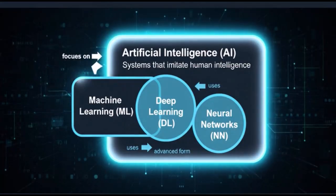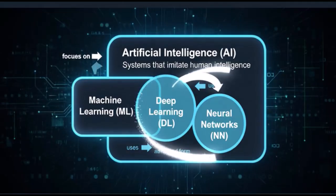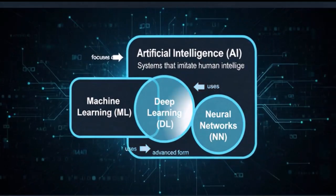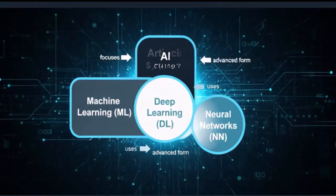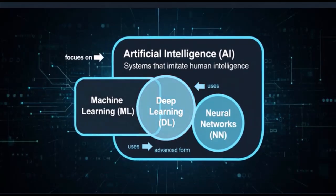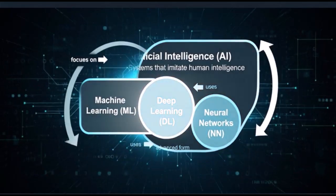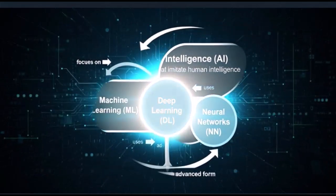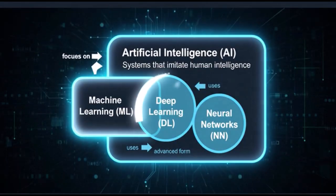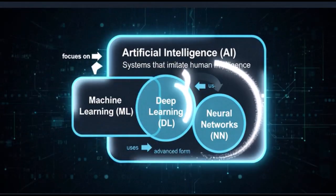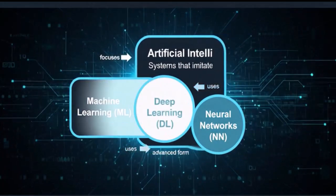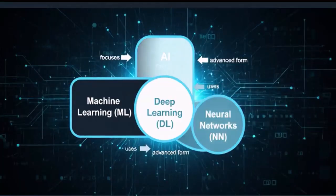At its core, artificial intelligence, or AI, is a vast and exciting field within computer science. Its primary goal is to create machines that are capable of simulating and sometimes even surpassing human intelligence. Think about tasks that normally require a human brain, like understanding language, recognizing faces, making decisions, or solving problems. AI aims to empower computers to do all of these things.